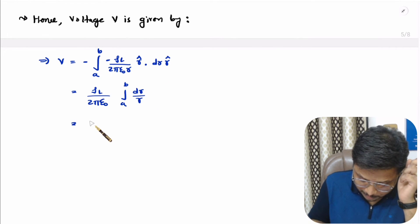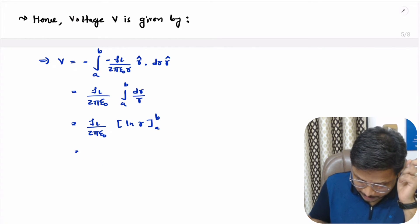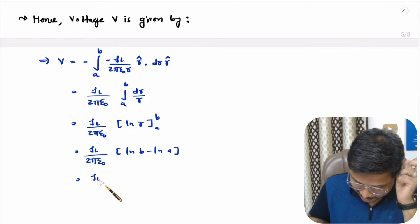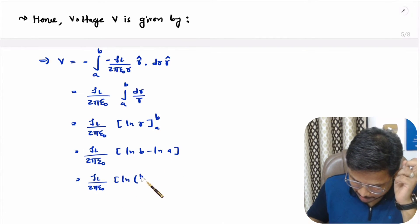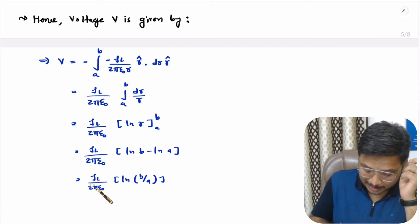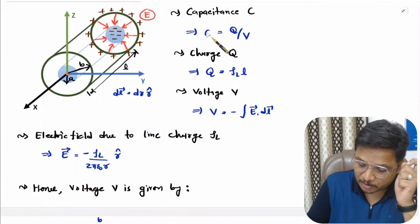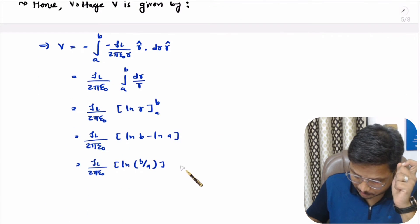Integration of 1 over R is ln R, with limits from a to b. Substituting the limits gives ln B minus ln A, and one should know that ln B minus ln A is ln(B/A). So that is the potential. Now we have potential and we have charge. We can substitute them into the equation of capacitance C. Let us call the capacitance equation as equation A, charge as equation 1, and voltage as equation 2.